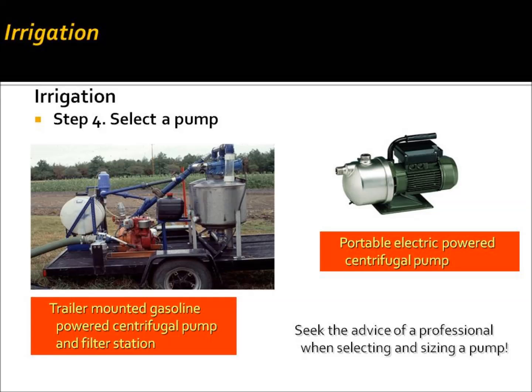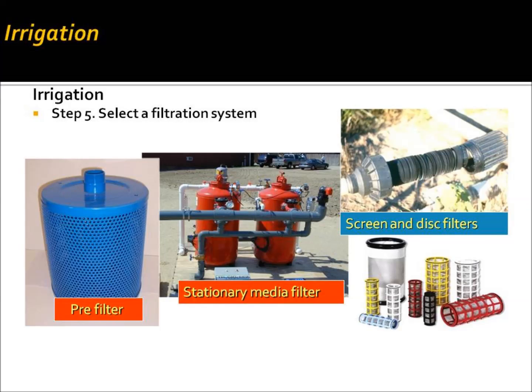The next step is to select a pump. When utilizing a municipal water supply, a pump may not be necessary. When utilizing well water, surface water, or rainwater harvesting, a pump will be needed. It's best to seek the advice of a professional when selecting and sizing a pump for your particular use and system design. It's also important to consider in step five the selection of a filtration system. Seek professional advice in selecting these. When utilizing drip irrigation, make sure you don't have any debris that will plug the emitters — it's best to have a series of different filters throughout the system to remove all debris.